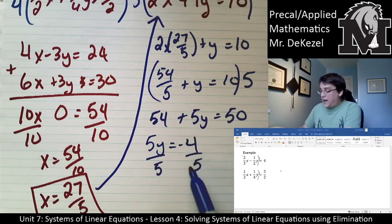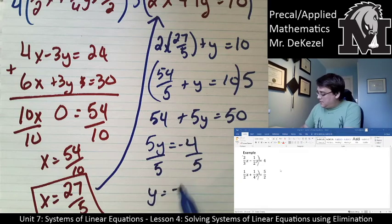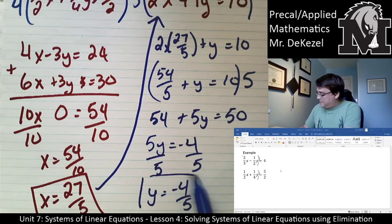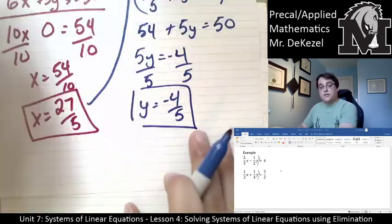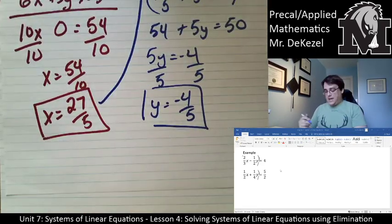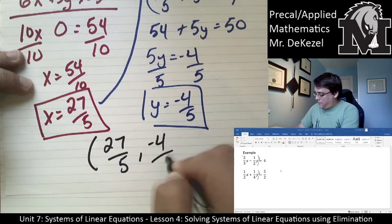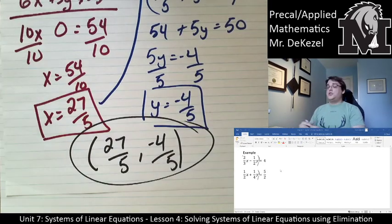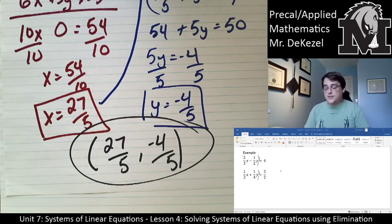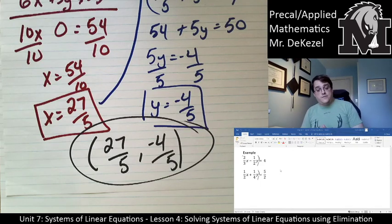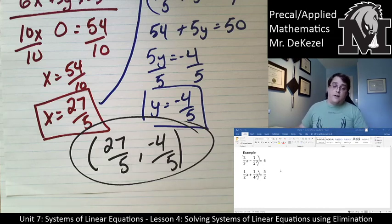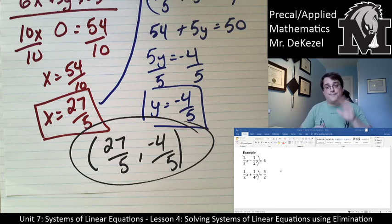Dividing both sides by 5: y = −4/5. Our solution is (27/5, −4/5). Don't be afraid of fractions — embrace them, they are now your life. Thanks very much for watching; I'll see you next time in the final lecture of the course.